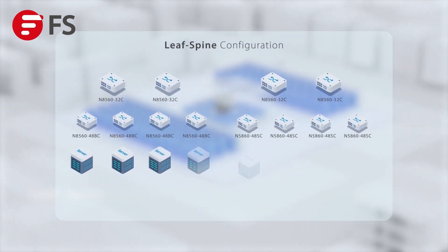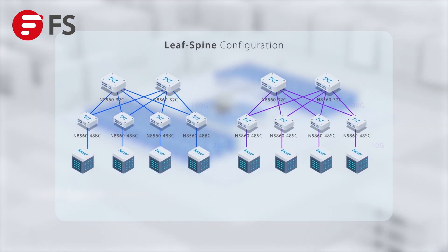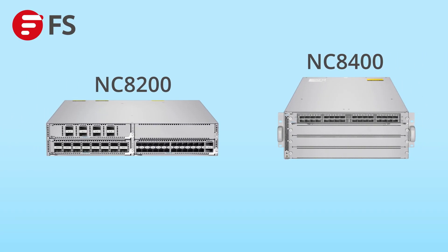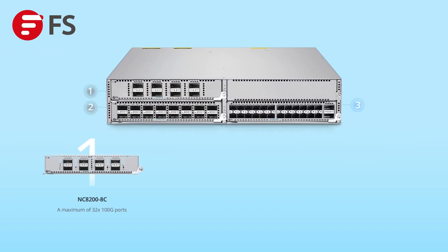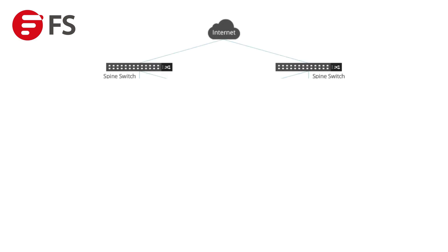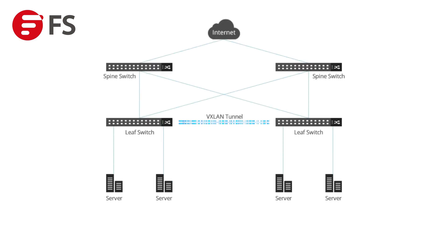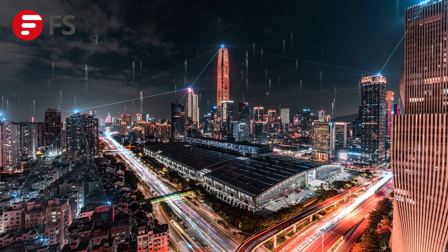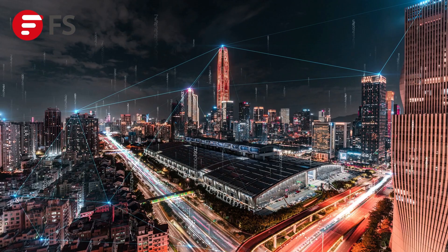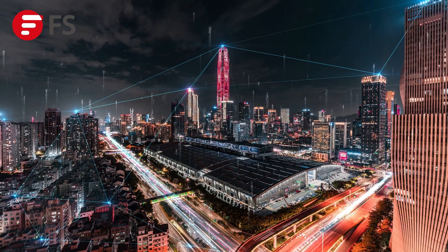They are highly reliable and scalable for top-of-rack and leaf-spine network deployment. FS modular switches contain NC8200 and NC8400 series with flexible multi-rate service boards. Additional network interfaces can be added, and expansion modules can be added to realize flexible high-density leaf-spine network deployment. FS modular switches are suitable for campus core and datacenter networks which demand high-load and high-throughput.